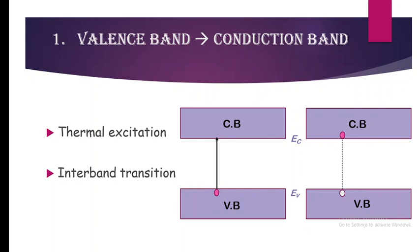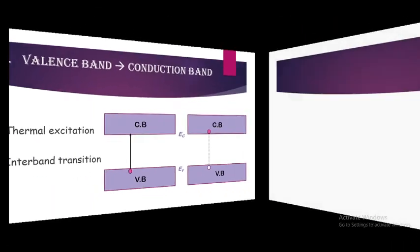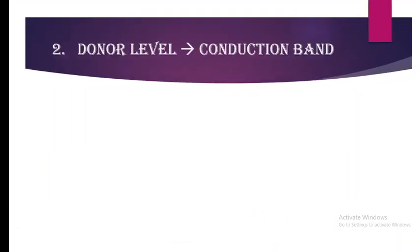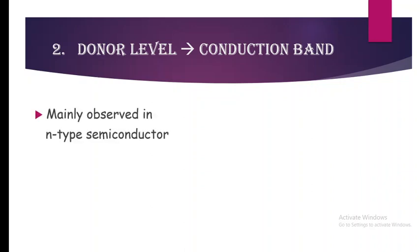This is the first type of transition. The second type is the transition of electron from the donor level to the conduction band. This is mainly observed in N-type semiconductors because the donor level is present in N-type semiconductors.